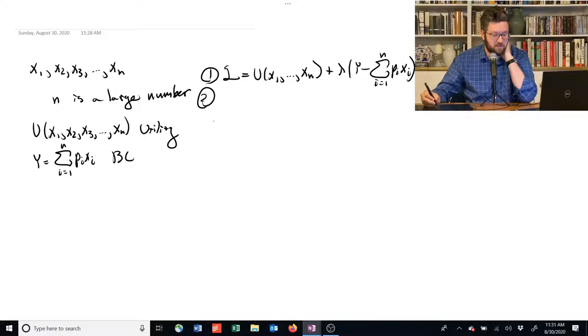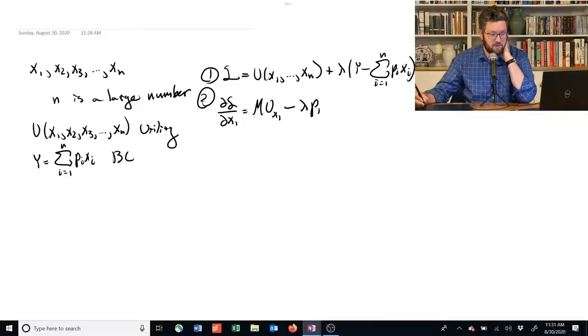Step two is to take the first order conditions. So we have hundreds of first order conditions now to take. We've got to take the partial derivative with respect to X1, and we get the marginal utility with respect to X1 minus lambda times P1.